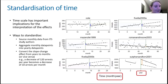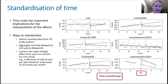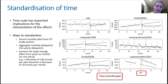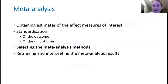One more option: convert the slope change effects from years into months. We can do that by analysing the series using yearly data points, then taking the slope change and dividing by 12, because there are 12 months in a year. So a decrease of 120 arrests per year would become a decrease of 10 arrests per month. Those are a few of the options.